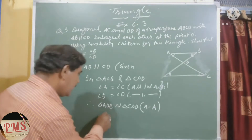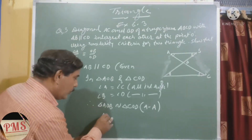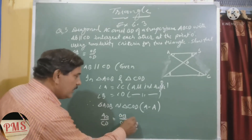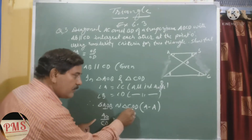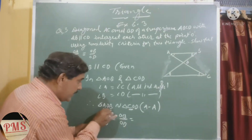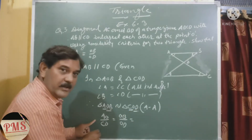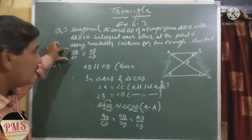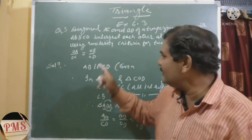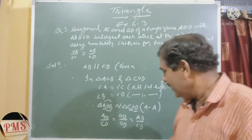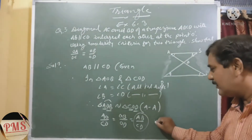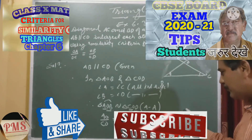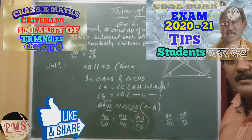Since the triangles are similar, the corresponding sides are proportional. Therefore, AO upon OC equals OB upon OD. Hence proved.